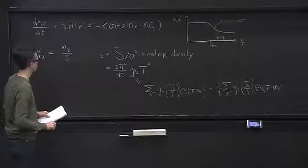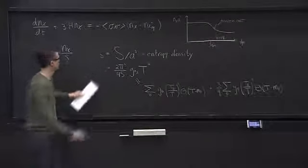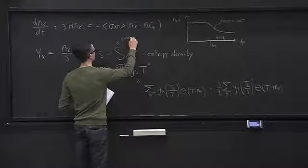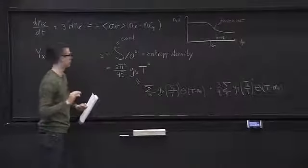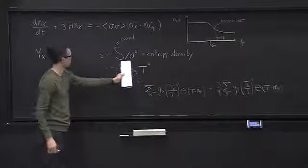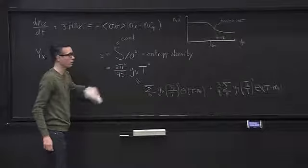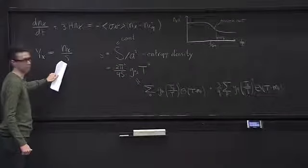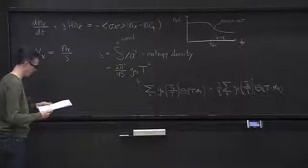In any case, I have this entropy, and I know the entropy is constant — unless something weird happens — because little s is proportional to a constant divided by a cubed. This thing looks like n_chi times a cubed. That means we can simplify the left-hand side of the equation.